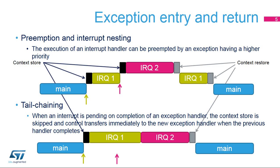The NVIC provides several features for efficient handling of exceptions. When an interrupt handler is served and a new request with higher priority arrives, the new exception can preempt the current one. This is called Nested Exception Handling. The previous exception handler resumes execution after the higher priority exception is handled.